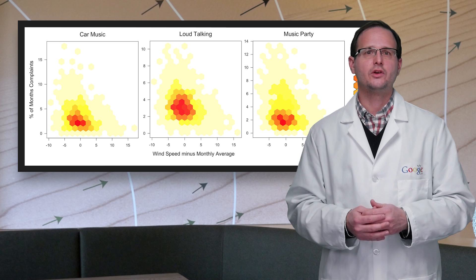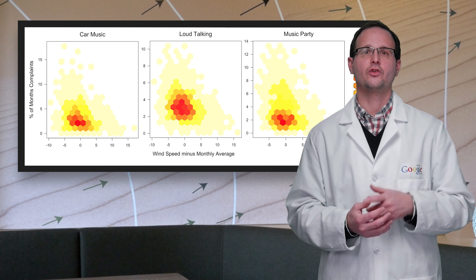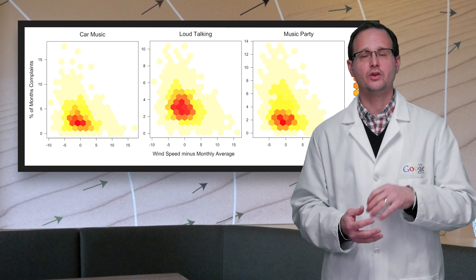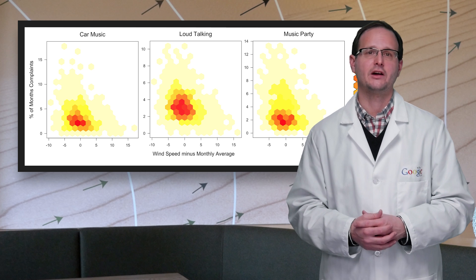For wind and noise, you can see a triangular pattern that implies a weak negative correlation. It suggests a greater likelihood of getting more noise complaints when the wind is low and significantly fewer calls when the wind is five knots above the monthly average.